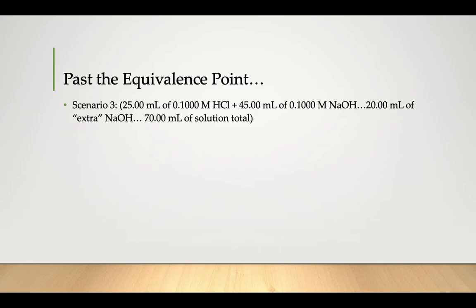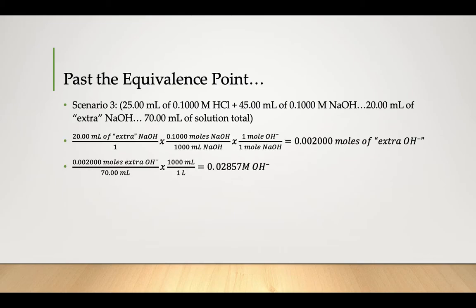What if we have scenario three? What if we added in 20 milliliters of extra base? Same process: convert those milliliters to moles using the molarity of the base, take those moles, divide them by the total volume of solution to get your molarity, take the negative log which gives you the pOH, and therefore the pH.